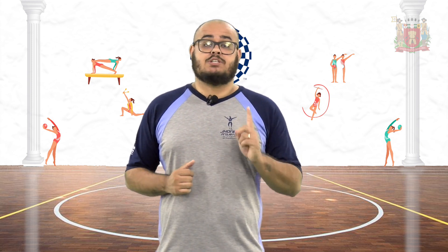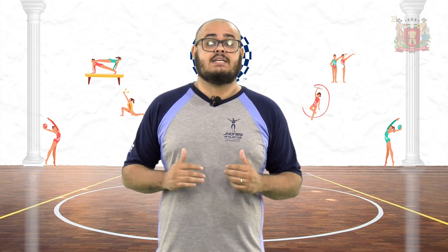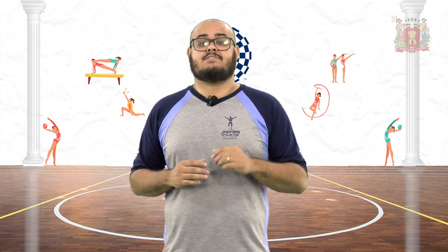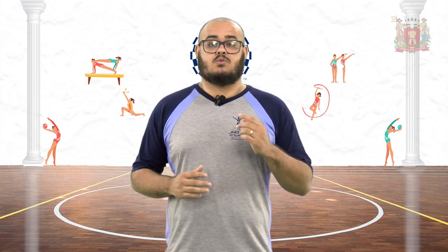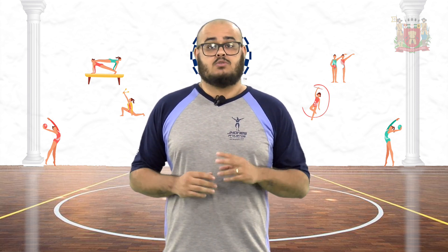A partir de janeiro de 2018, a classificação funcional passou a dividir os atletas do futebol de sete para paralisados cerebrais em três novas classes funcionais: FT1, FT2 e FT3. FT1 é comprometimento severo, FT2 é comprometimento mediano e FT3 é comprometimento leve. Na regra atual, é obrigatório que exista pelo menos um atleta da classe FT1 em campo. Caso não seja possível, o time deve jogar com seis ou cinco jogadores. Cada equipe só pode contar com no máximo um atleta da classe FT3 em campo durante toda a partida.